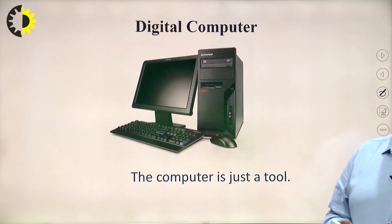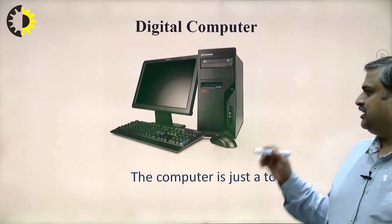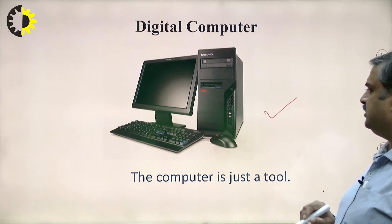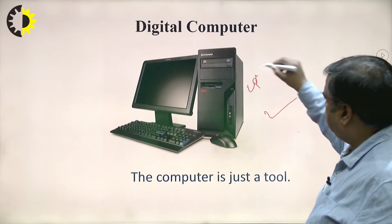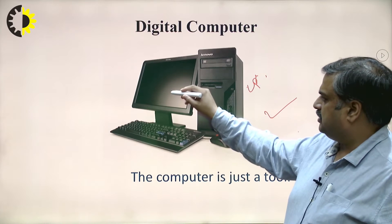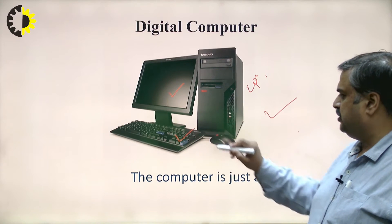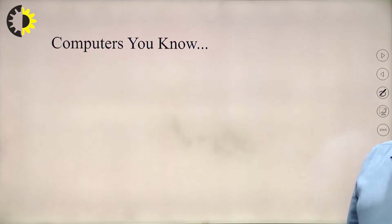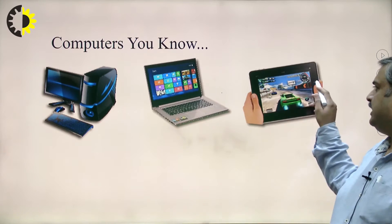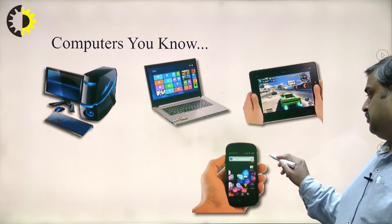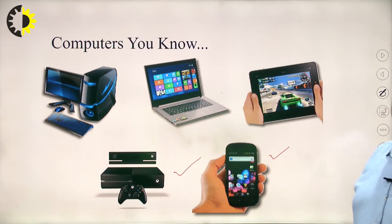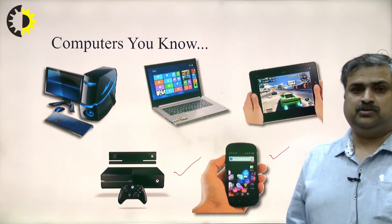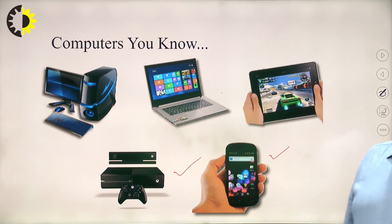Everyone has seen a digital computer. This is a CPU, this is the display device, this is the keyboard and mouse — we have all been using these. There are other computers like desktops, laptops, tablets, and smartphones, which are also a kind of computer. Xbox and gaming consoles also perform lots of processing to let us play games, so they are also digital computers.